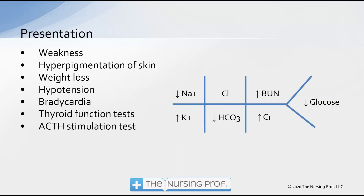On presentation, expect to see weakness, hyperpigmentation of the skin, weight loss, hypotension, and bradycardia. These are caused by fluid loss — a major contributor resulting from the loss of mineralocorticoids — leading to decreased blood pressure and heart rate. Blood pressure drops primarily from fluid loss but also because we don't have stress hormones like epinephrine helping to maintain blood pressure and heart rate. Thyroid function tests can be altered, and the ACTH stimulation test is our definitive test for adrenal insufficiency.